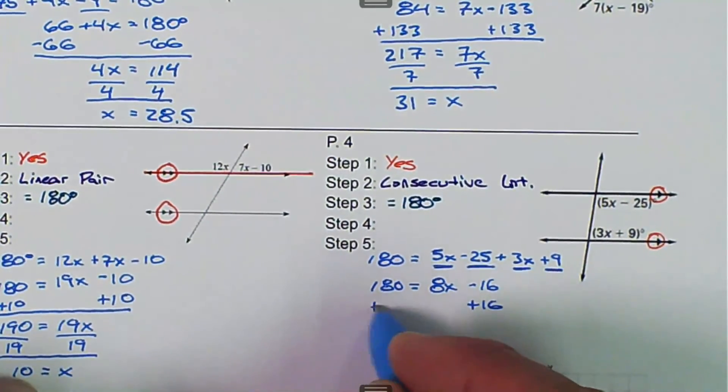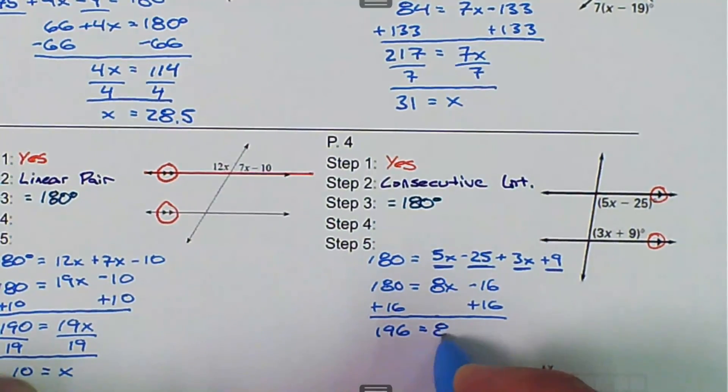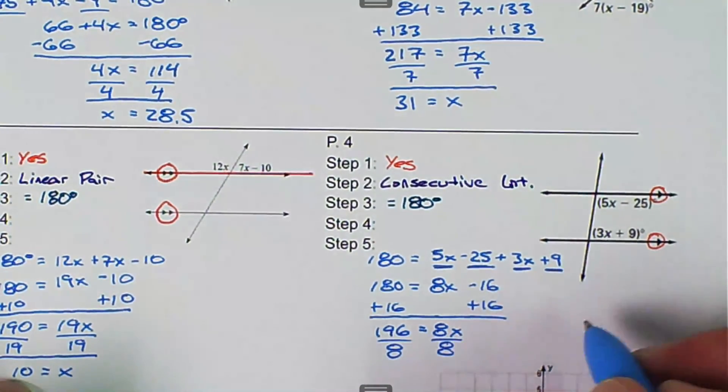Then we add 16 to both sides by the addition property of equality. And we get 196 is equal to 8x. And divide by 8 for the division property of equality. And then we get x is equal to 24.5.